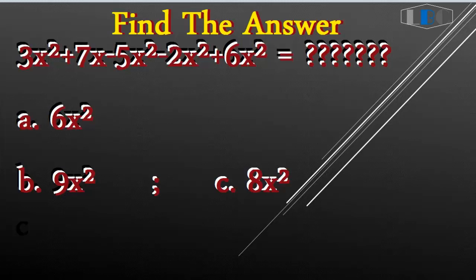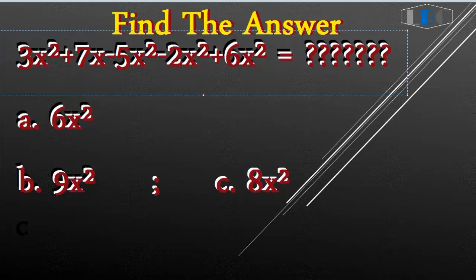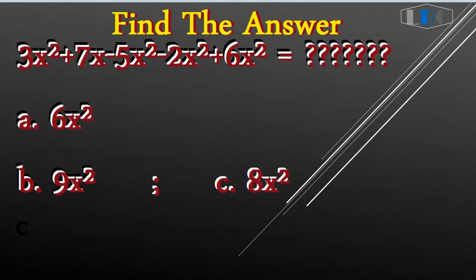Today's topic — you can see it here — is: 3x² plus 7... and this is minus 5x² minus 2x² plus 6x² equals what?